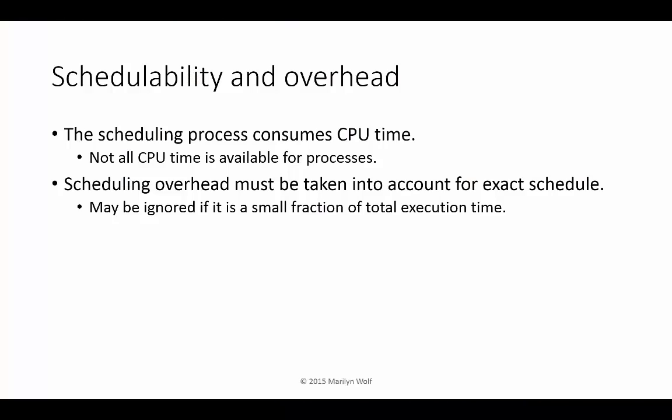RMS assumes that context switching takes zero time. Of course, that's not true. Scheduling executes instructions, which takes CPU time — time that's not available to the processes themselves. If we need to calculate an exact schedule, we would have to take this scheduling overhead into account. But in many cases it's a small fraction of the total execution time, and so scheduling overhead can be ignored.